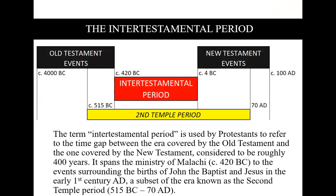Another term you need to be familiar with is the intertestamental period. There you see the Old Testament events and then the New Testament — between them there's a gap of about 400 years. When we talk about the intertestamental period, we're talking about that gap, and we believe no inspired Scripture was produced during that time. But some of the books are useful because they're historical and tell us what happened between the two Testaments, especially books like 1 Maccabees.